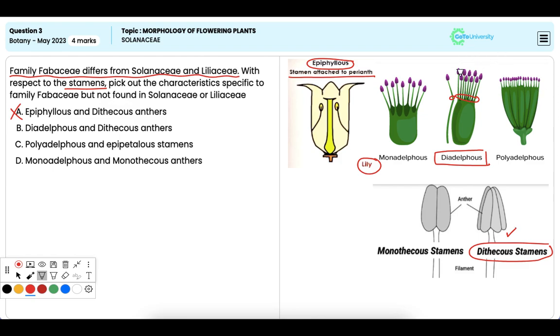In this family typically nine stamens are fused into one bundle and one remains free, that is nine plus one arrangement. Hence it is the correct answer.